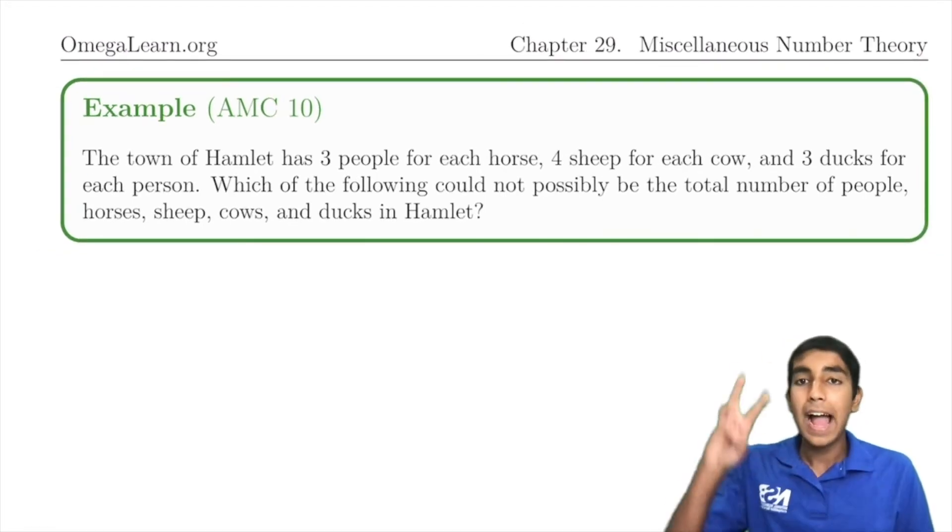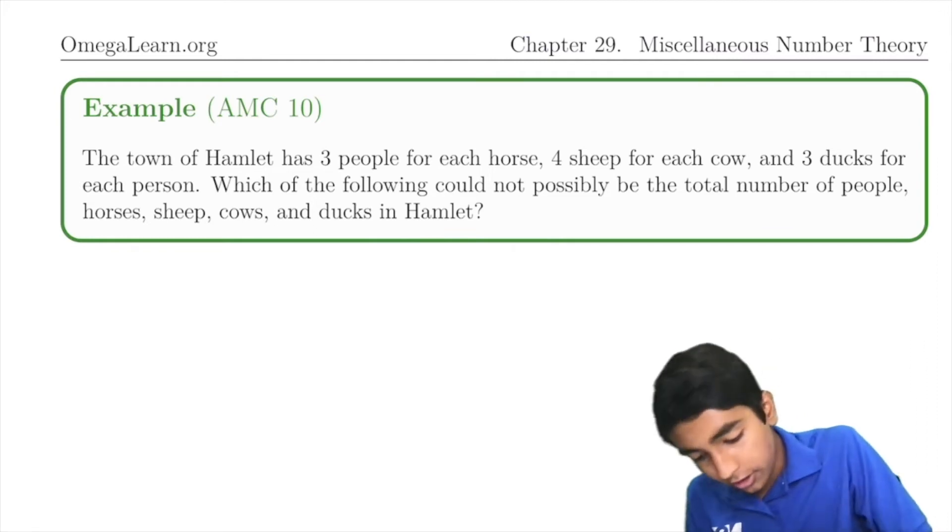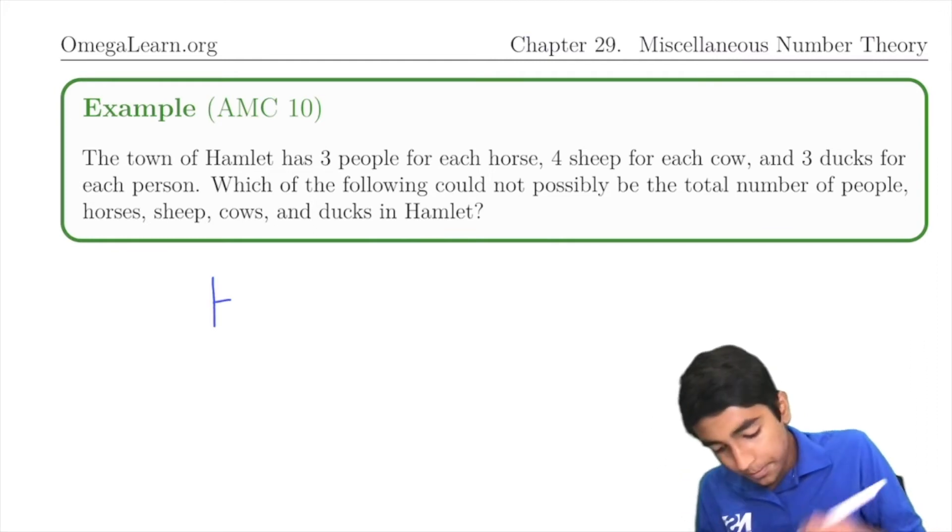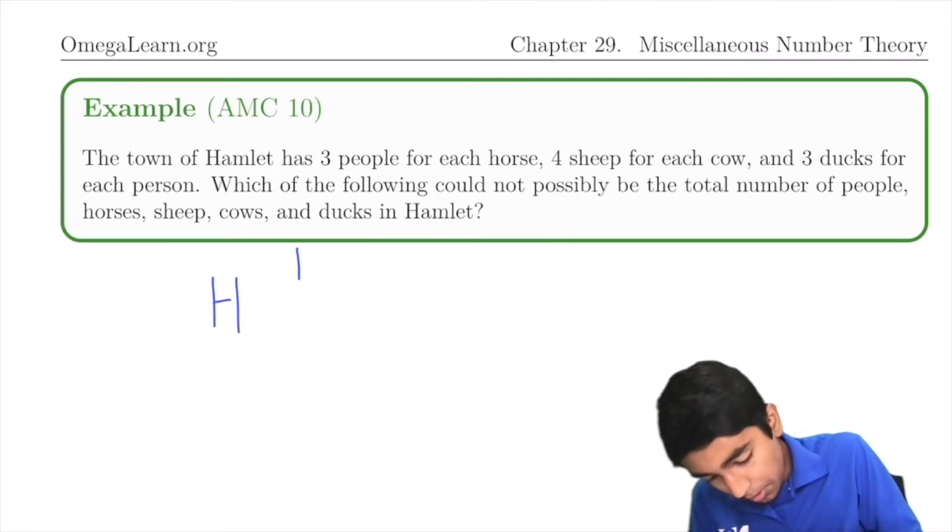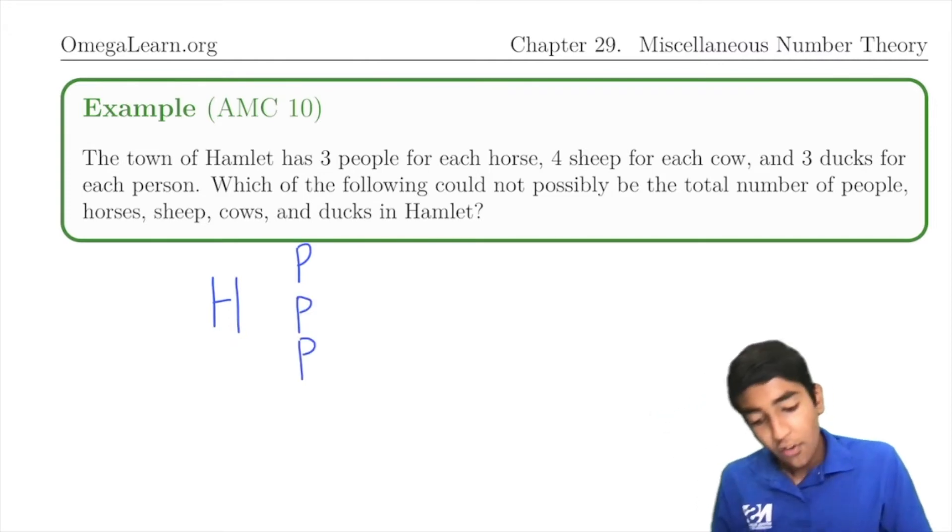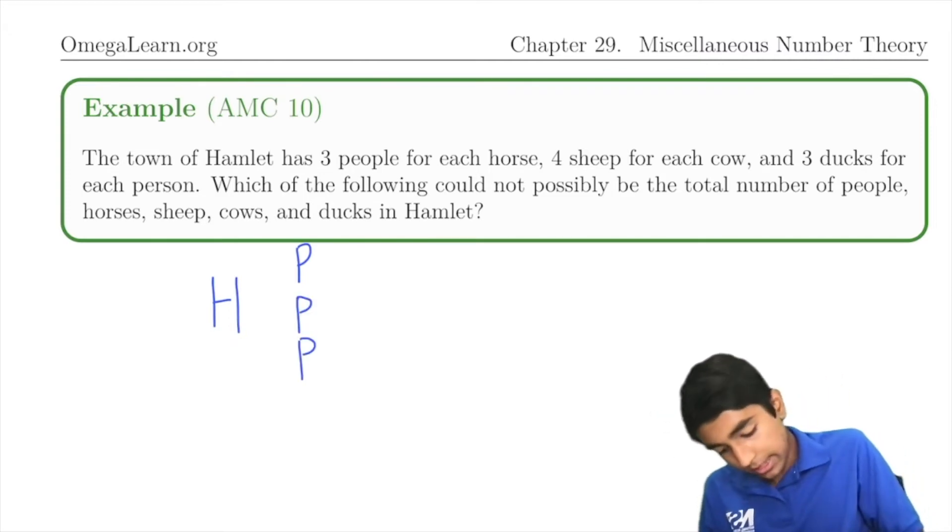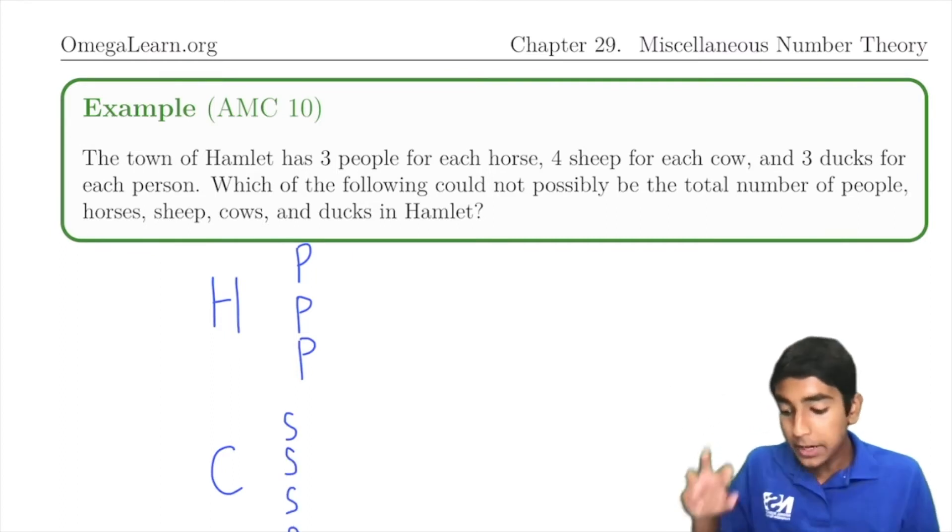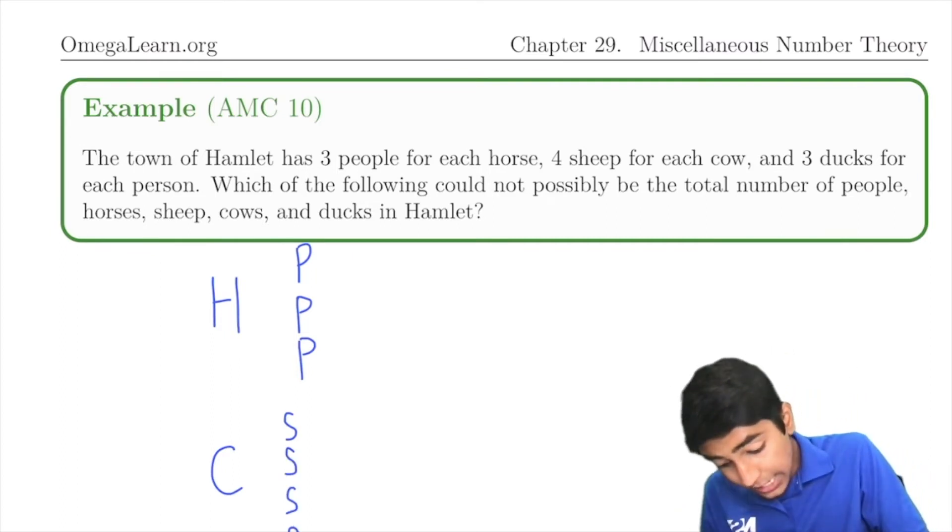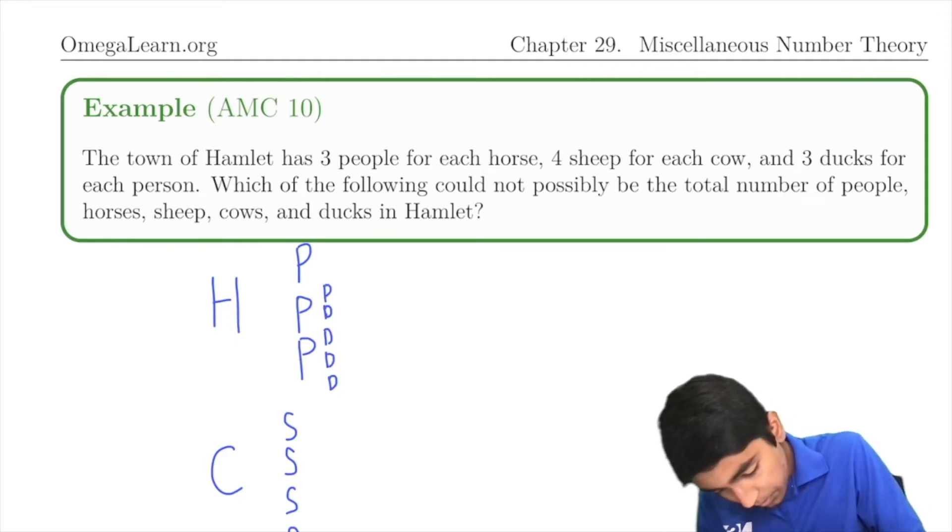The town of Hamlet has 3 people for each horse. So horse, there's going to be 3 people. 4 sheep for each cow. So let's say cow, sheep, sheep, sheep, sheep. 3 ducks for each person. So for each of these people, we have an additional 3.